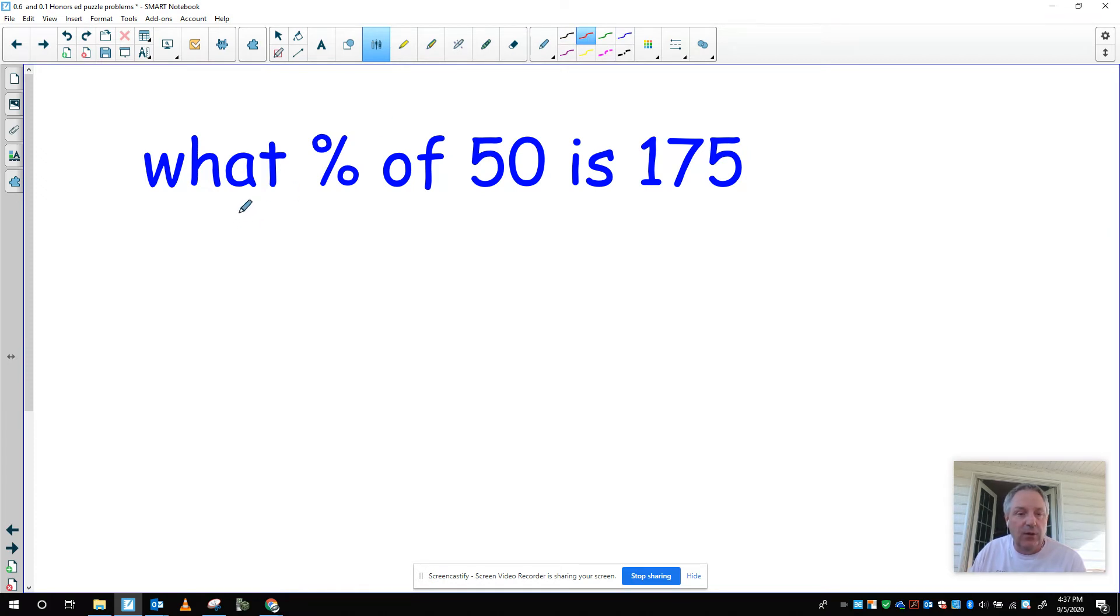Alright. So what percent, what tells me that's my variable, of tells me to multiply, and is tells me to write my equal sign. Instead of writing X times 50, I'm always going to write 50 times X is 175. I'll divide both sides by 50.